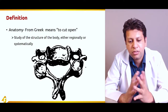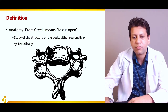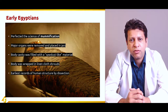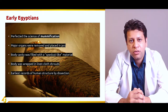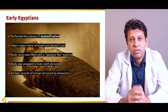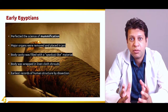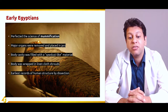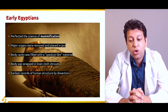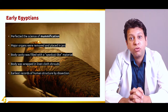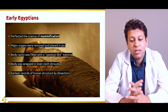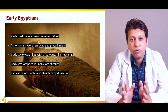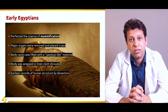Going back in the records, it was the early Egyptians who perfected the science of mummification — they were the first ones to start cutting and opening up the body to see what's inside. Major organs were removed and placed in jars, the body cavity was filled with a sawdust-like material, and it was wrapped in linen cloth shrouds. The earliest records of human structure by dissection are on the walls of the great pyramids in Egypt.